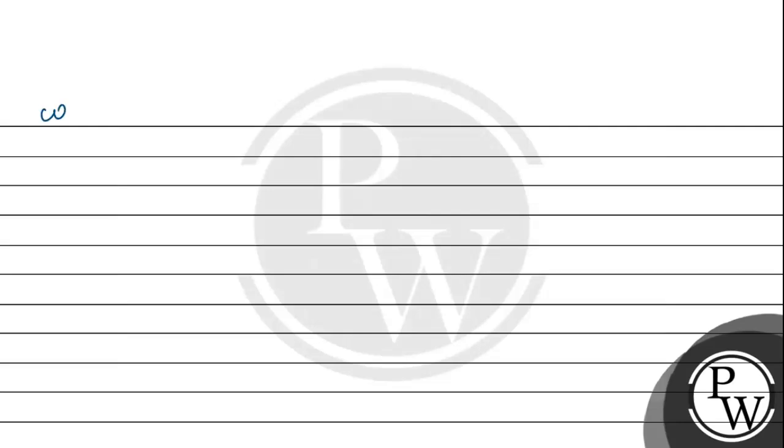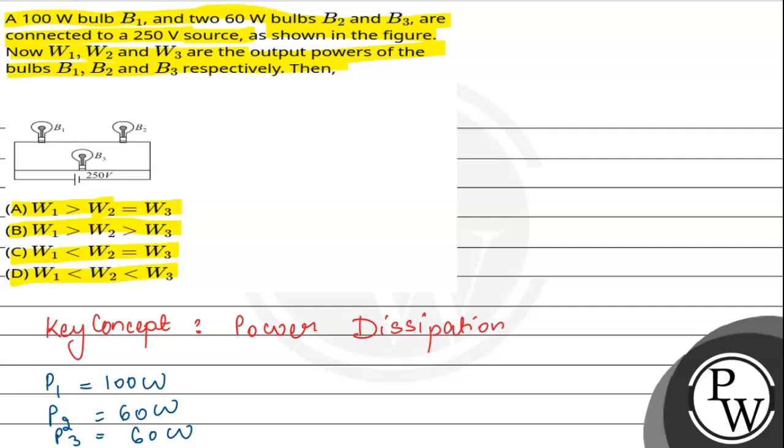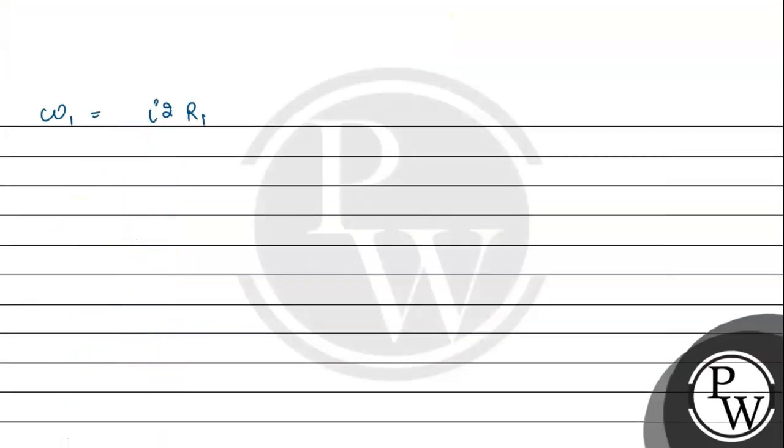Now we have W1 value, which is the power dissipation in bulb 1. It will be I squared into R1. I is the current in the bulb 1 branch. This will be the rated voltage which is 250 by net resistance in that branch, which is R1 plus R2, squared into R1.